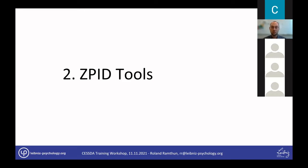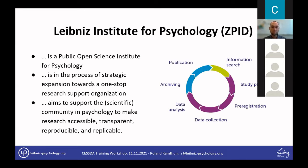Scientists asked for support from research infrastructures like ZPID in adapting norms and standards in psychological science and creating the necessary tools. This is the mission of ZPID: a public open science institute for psychology and related disciplines, with the goal of becoming a one-stop research support organization offering research infrastructure services for each stage of the research cycle.